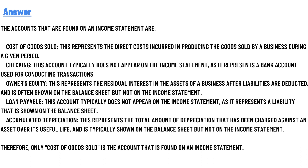Accumulated depreciation represents the total amount of depreciation that has been charged against an asset over its useful life, and is typically shown on the balance sheet but not the income statement. Therefore, only cost of goods sold is the account that is found on the income statement.